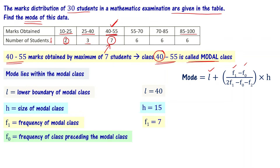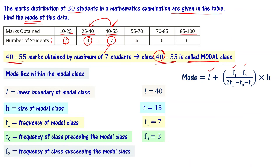F0 is the frequency of the class preceding the modal class. The modal class is 40 to 55, and the class before it is 25 to 40. The frequency of that class is F0 = 3. F2 is the frequency of the class succeeding the modal class — that is, the class 55 to 70. So F2 = 6.